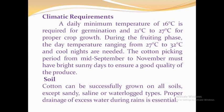Next is the climatic requirement. A daily minimum temperature of 16 degrees centigrade is required for germination, and 21 to 27 degrees centigrade during the vegetative period. During the flowering phase, day temperatures ranging from 27 to 32 degrees centigrade are needed. The cotton picking period from mid-September to November must have bright sunny days to ensure good quality produce.